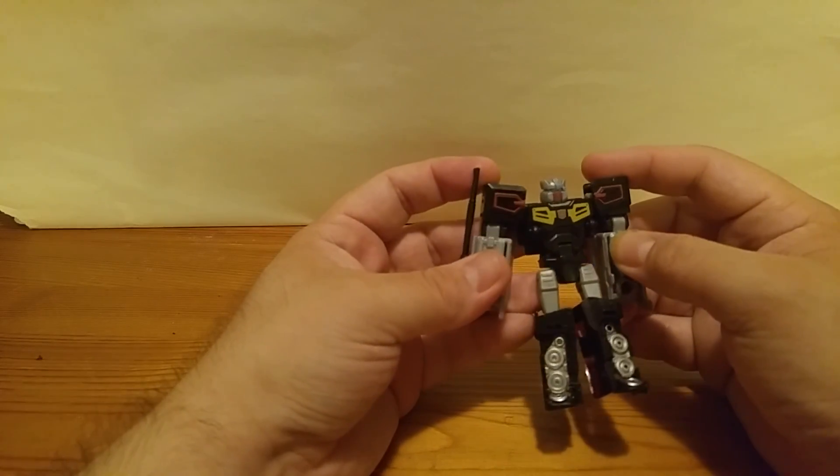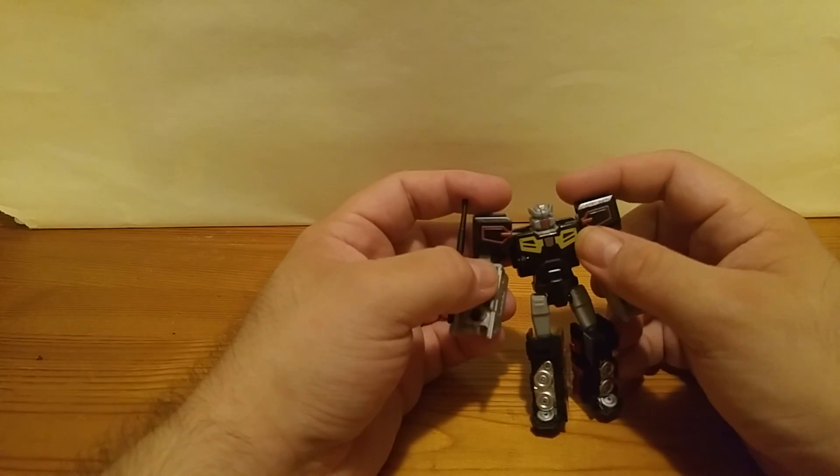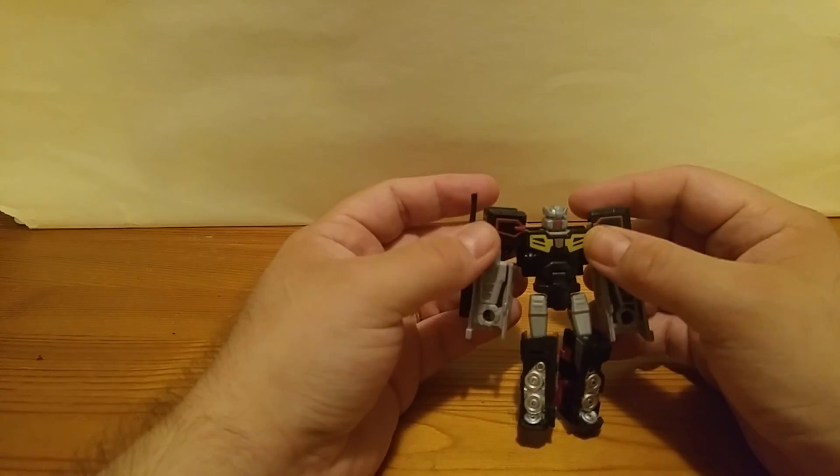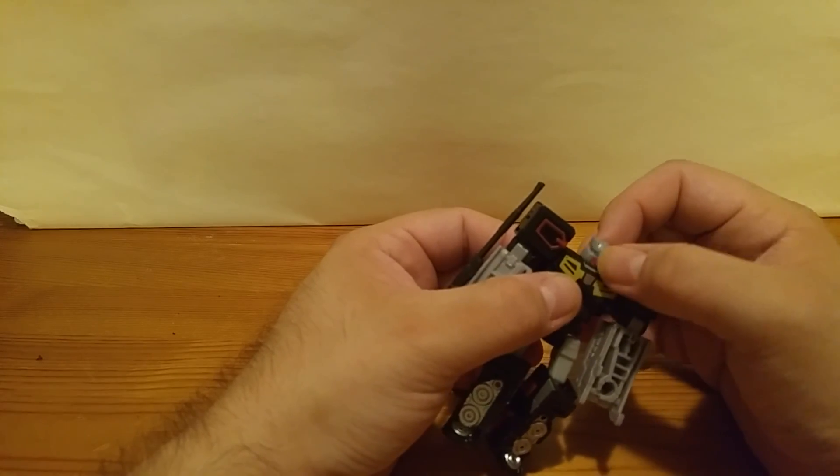He does have weird proportions. The arms are larger than they should otherwise be, but that is just because of the transformation. His head rotates and moves up and down thanks to the transformation hinge.